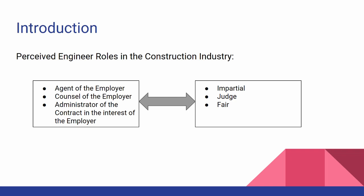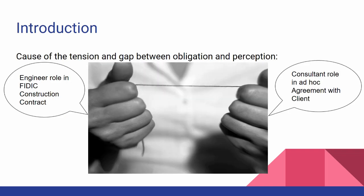If the engineer is considered biased from the start, he is not discharging his obligations. If he is considered a judge but is contractually acting on behalf of the employer, there is still a shortcoming. This tension really stems from one thing: an inconsistency between the construction contract — and the engineer's role in that contract — and the consultancy contract. A lot of times we forget there is a consultancy contract between the engineer as consultant and the client.